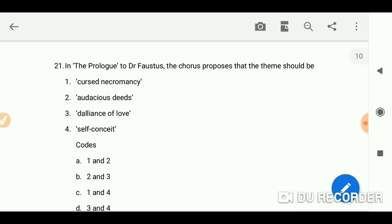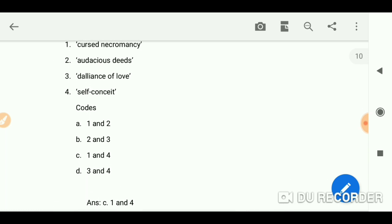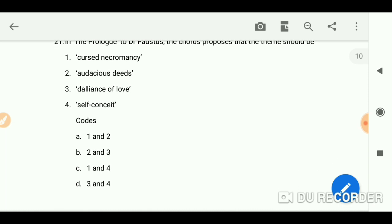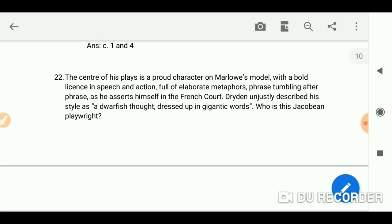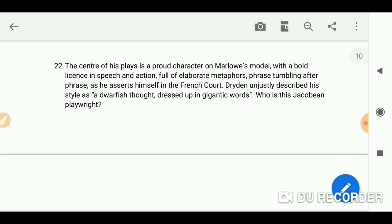In the prologue to Doctor Faustus, the chorus proposes that the theme should be cursed necromancy and self-conceit. The center of his plays is a proud character on Marlowe's model with a bold license in speech and action, full of elaborate metaphors, phrase stumbling after phrase as he asserts himself in the French court. Dryden unjustly described his style as a dwarfish thought dressed up in gigantic words. Who is the Jacobean playwright? George Chapman.